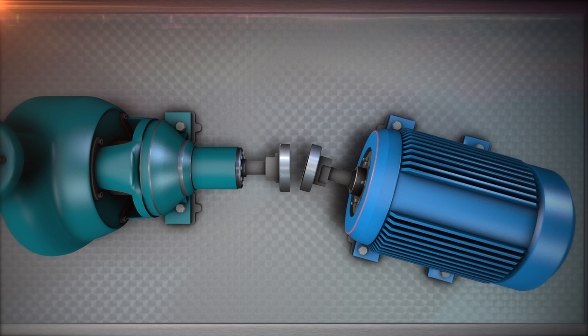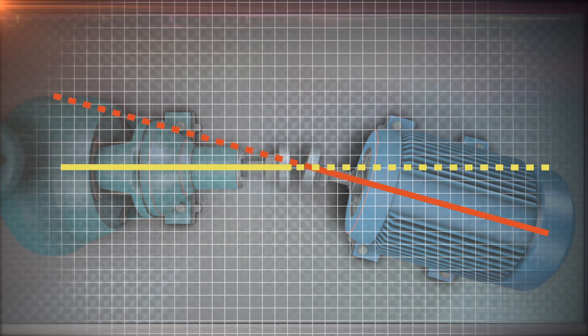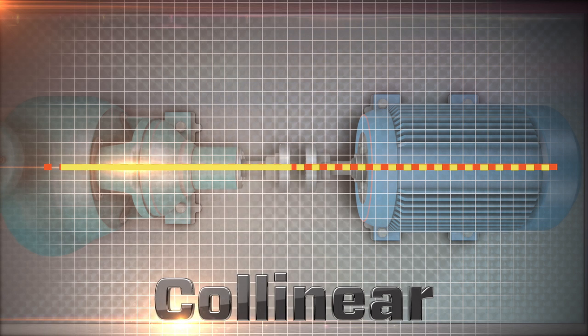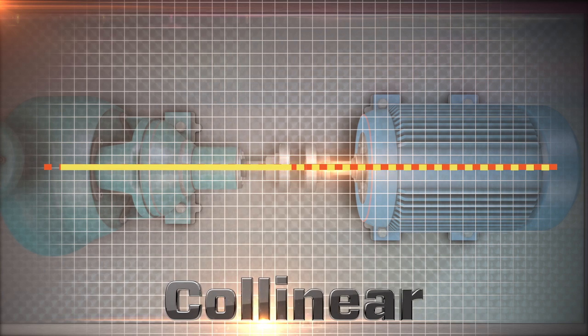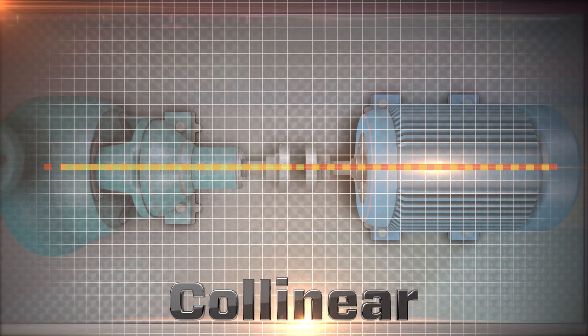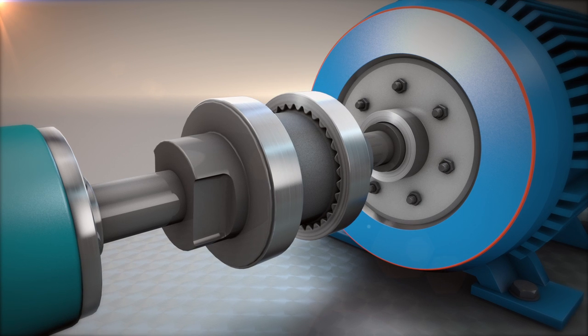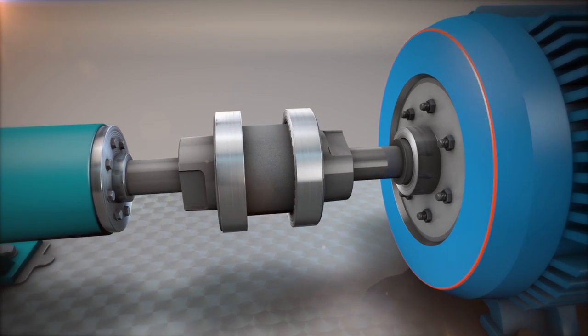Forget for a second that we are aligning two machine shafts. Instead, imagine two simple lines that represent the shafts. The goal of an alignment technician is to adjust these two lines to be collinear. Collinear means that two lines are positioned as if they were one single line. In the real world, we aim to align the machines as collinear as possible within tolerance.